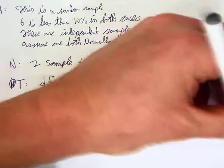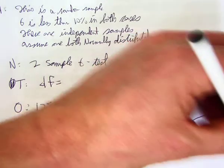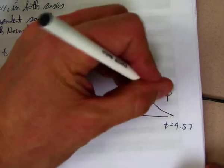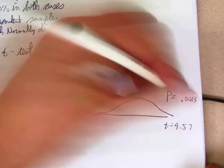So we draw that up. t is 4.57. Let me pull that in a little bit more. There you go. p-value of .0013. Last thing we have to do is get our degrees of freedom.